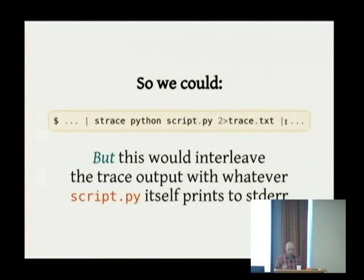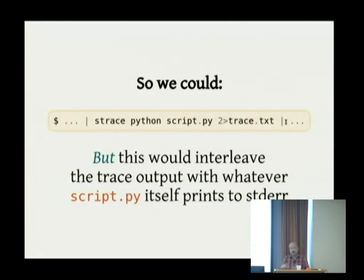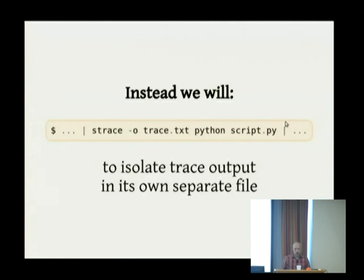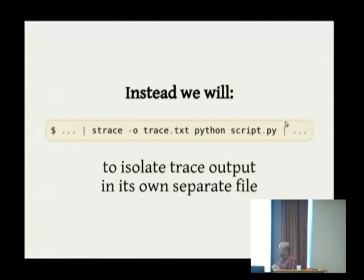All of that to say: we could capture the output of strace. The way you invoke strace is simply by putting the word strace to the left of the command you would run. We could use two-greater-than to send all of the logging messages into a file so they don't get mixed up on screen with the actual output of our process. But if script.py prints error messages or Python dies with a stack trace, it would be mixed into our trace. So strace allows you to put a dash-o command to write its output into a file instead.